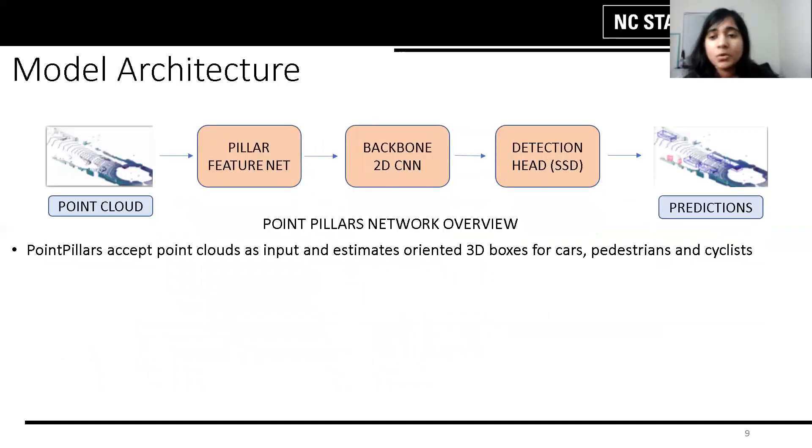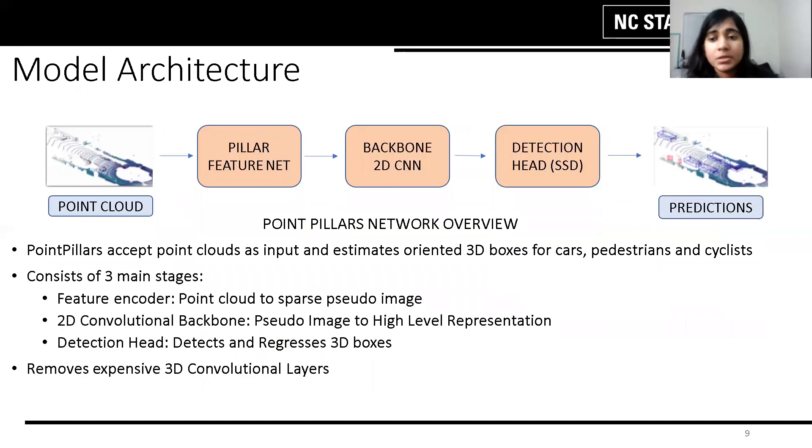Point pillars encode the point cloud into vertical pillars of points in space to form pseudo images. This is the first step which is done by the feature encoder. The pseudo image is then fed into a 2D convolution backbone followed by a detection head.